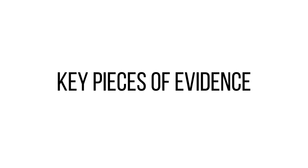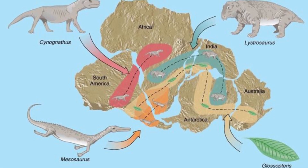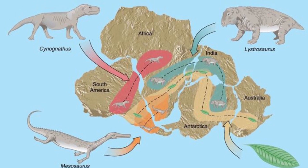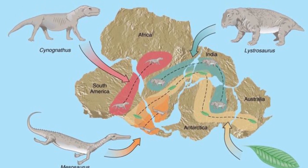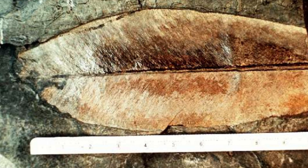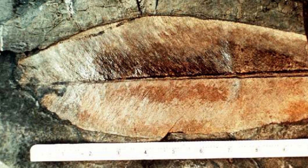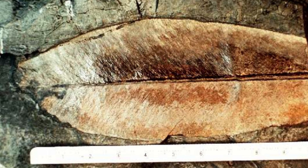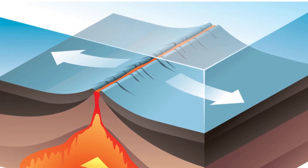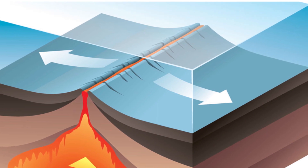Overwhelming evidence supports the theory of plate tectonics. Fossils of the same species found on different continents provide evidence for the existence of ancient land connections. Rock formations that align across continents further support the idea of tectonic plates moving over time.